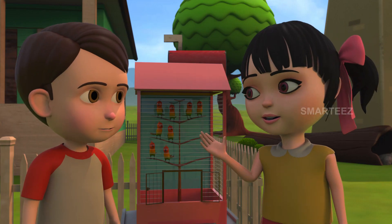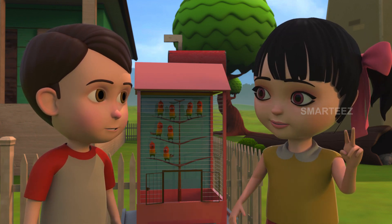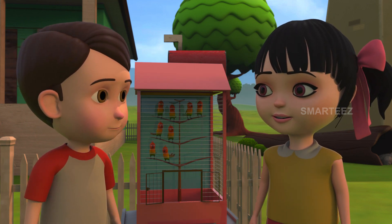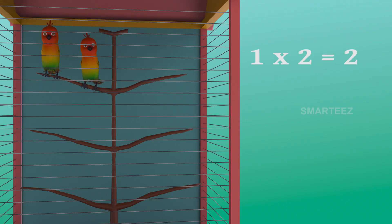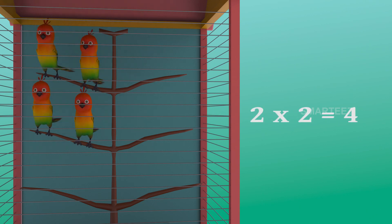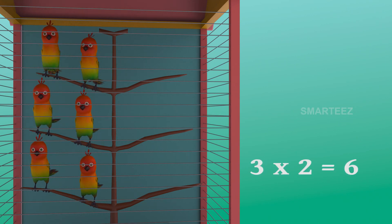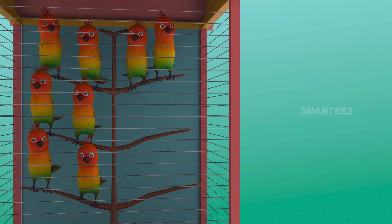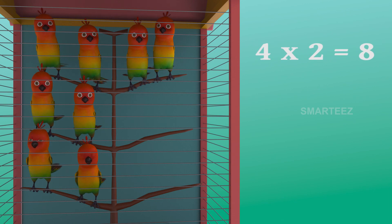There were six in the cage already. Now there are two more making it eight. Yes, four twos make it eight. The first set had two parakeets. The second set of two were added, it became four. The third set of two parakeets made it six. Now the fourth set of two made it eight. So four sets of two parakeets made it eight parakeets.